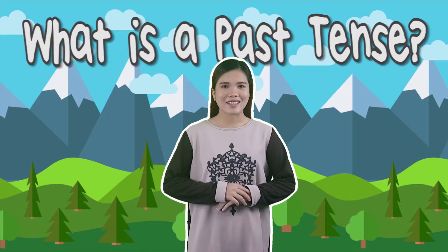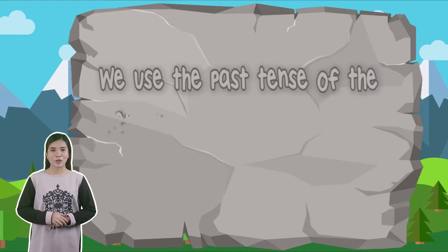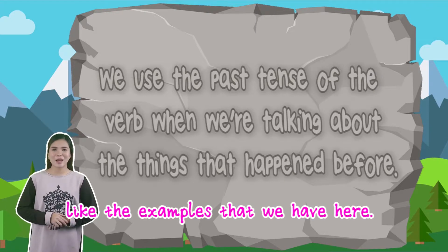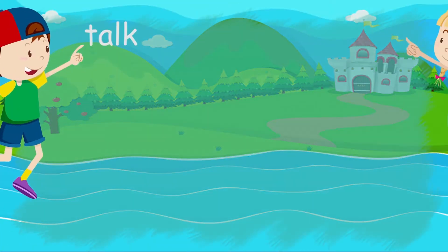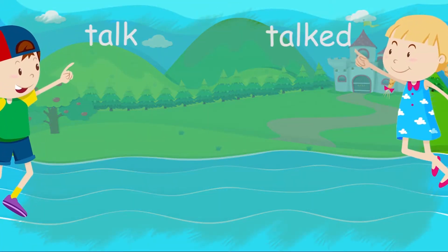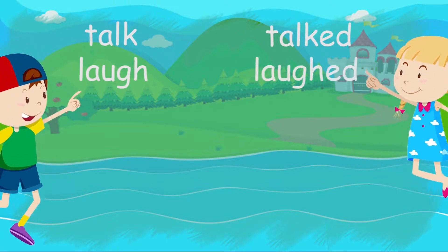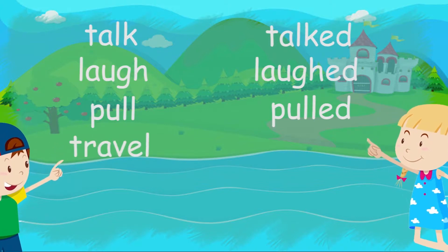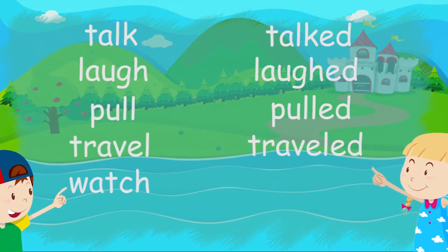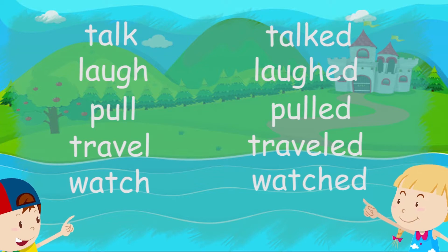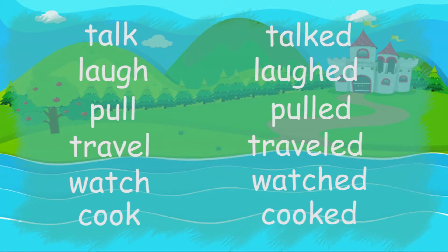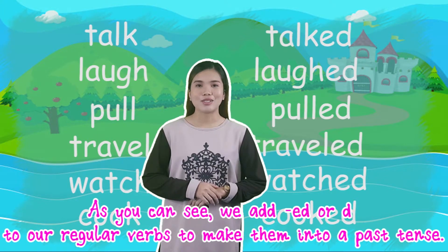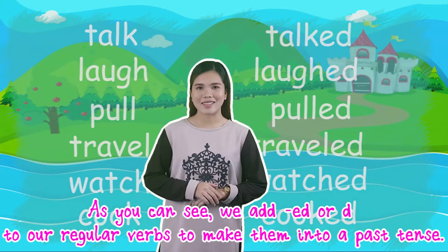What is a past tense? We used the past tense of the verb when we were talking about things that happened before. Like the examples that we have here: talk, talked. Love, loved. Pull, pulled. Travel, travelled. Watch, watched. Cook, cooked. As you can see, we add ED or D to our regular verbs to make them into a past tense.